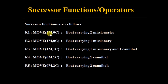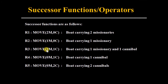Rule 1 — Move 2M0C: the boat carries two missionaries and zero cannibals. Rule 2 — Move one missionary, zero cannibals. Rule 3 — Move one missionary, one cannibal. Rule 4 — Move zero missionaries, one cannibal. Rule 5 — Move zero missionaries, two cannibals.